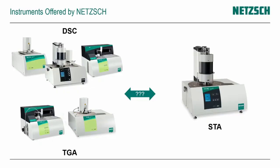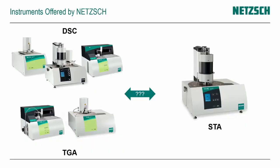TGA and DSC are two of the main techniques and methods in the field of thermal analysis. NETZSCH offers a wide variety of instrument solutions to measure these methods and properties. We have dedicated DSC systems — the DSC-204F1 Phoenix, DSC-214 Polymer for the low temperature range, or the DSC-404 for the high temperature field. Similarly, we have dedicated TGA instruments like the 209F1 Libra or 209F3 Tarsus. On the other side, we have the simultaneous thermal analyzers, or STA, which is the combination of TGA and DSC at the same time.